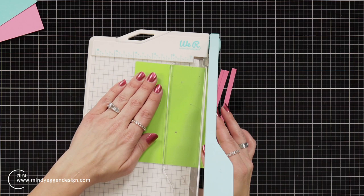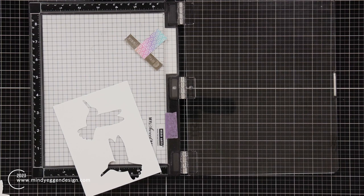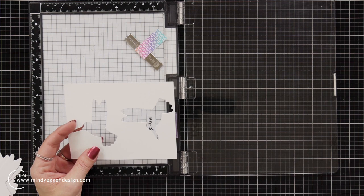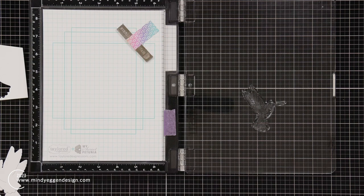For my stamping, the easiest way I found was using the coordinating die to cut out a bunch of the hummingbirds from white cardstock. I saved one of those negative pieces and trimmed it out. I only need one of these. I don't need a bunch.